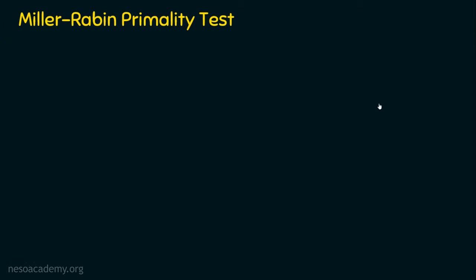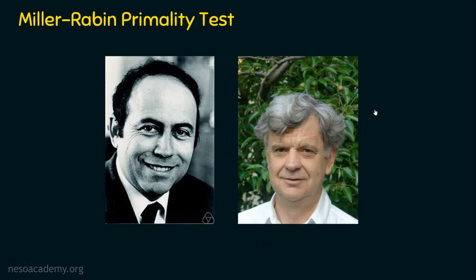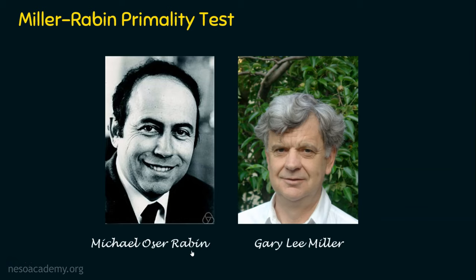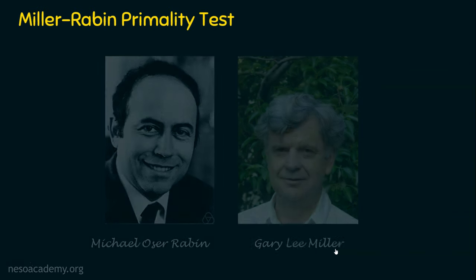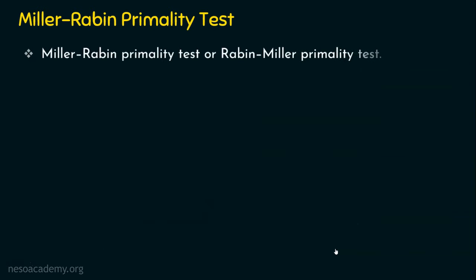Let's dive into the topic of the day: the Miller-Robin primality test. We have two important personalities — Australian scientist Michael Auser-Robin and Professor Gary Lee Miller. The Miller-Robin primality test is the outcome of the hard work of these two eminent people.